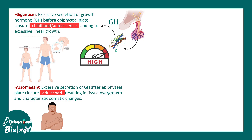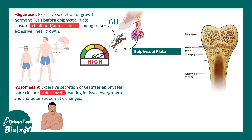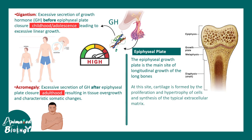More technically, there is an epiphyseal plate in the bone that closes after a point in time when a person is reaching adolescence. This epiphyseal growth plate is the main site of growth in the longitudinal or long bones. At this site, cartilage is formed by proliferation and hypertrophy of cells, which synthesize extracellular matrix, deposit it on the bone, and essentially elongate the bone over time. The epiphyseal plate closure happens late in adolescence, so if growth hormone is secreted in excess before that time it leads to gigantism, and if after, it leads to acromegaly.